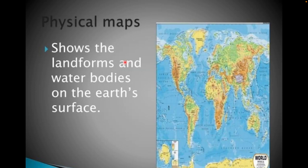The physical map majorly shows landforms and water bodies — oceans and the physical features of the earth.